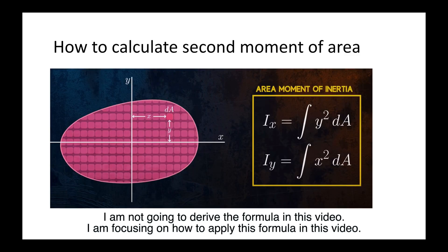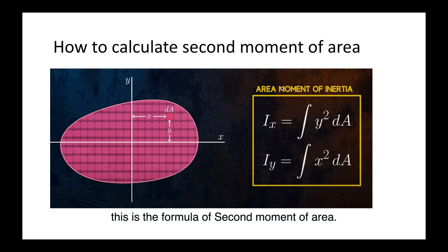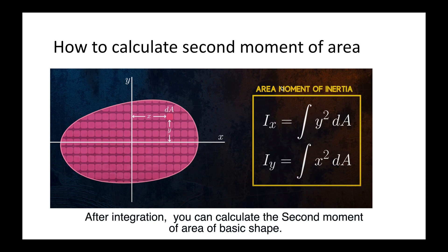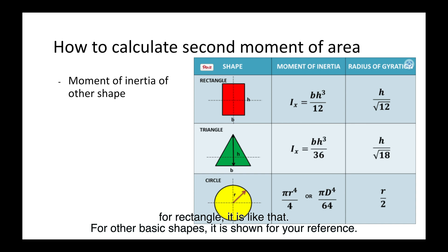I am not going to derive the formula in this video; I am focusing on how to apply it. I will explain it with an example and use an Excel spreadsheet to calculate it — you can download it in the comments section. This is the formula of second moment of area. After integration, you can calculate the second moment of area of basic shapes. For a rectangle, the formula is as shown; for other basic shapes, formulas are provided for reference.